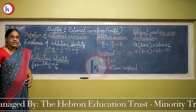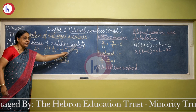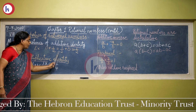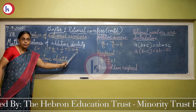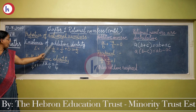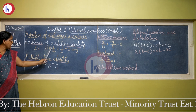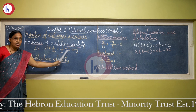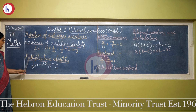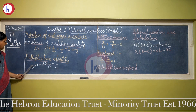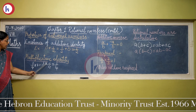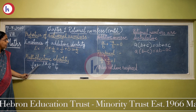Let us see more properties of rational numbers. The existence of additive identity: when we add a rational number with 0 in any order, we still get that rational number. So 0 is the additive identity for rational numbers. For multiplicative identity: when we multiply any rational number by 1 in any order, we get that rational number, so 1 is the multiplicative identity.